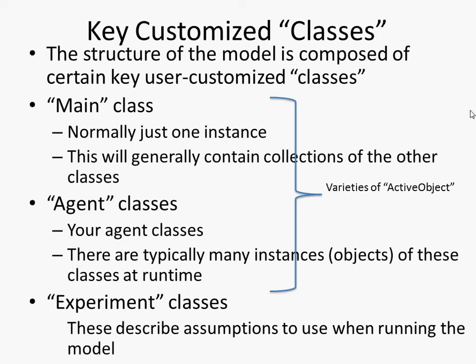In the agent class, you'll be defining — in this case, person — what agenthood means. What are the characteristics of a person, what are the behaviors of that person? What are their various attributes in terms of their state, the things that evolve over time, in terms of the parameters about them, and in terms of their behavior.